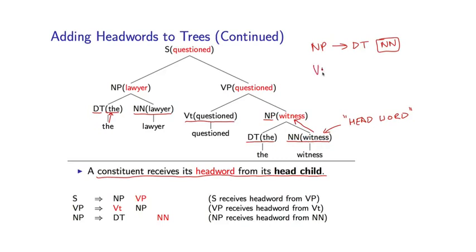Similarly, if we look at VP goes to VT NP, let's say for the sake of argument that VT has been identified as the head of this rule. That means that this VP gets the word questioned from that. We have a similar step here. And finally, if we have S goes to NP VP, let's assume that the VP is the head. And so this lexical item gets propagated up through here.